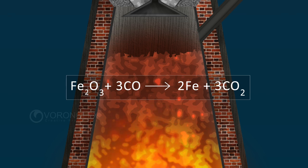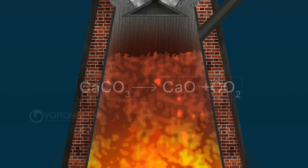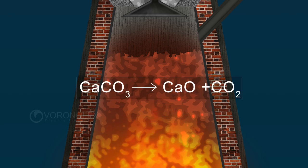At high temperature, calcium carbonate decomposes to form calcium oxide and carbon dioxide: CaCO3 forms CaO and CO2.